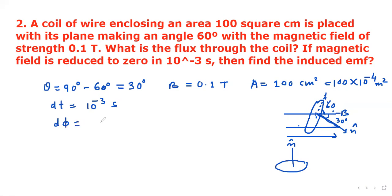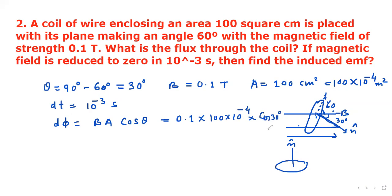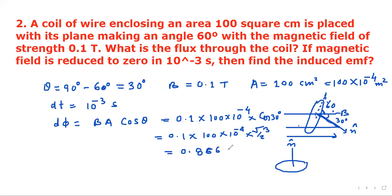Magnetic field B = 0.1 Tesla, area = 100 cm² = 100 × 10⁻⁴ m², theta = 30°, and dt = 10⁻³ seconds. So φ = BA cos θ = 0.1 × 100 × 10⁻⁴ × cos 30° = 0.1 × 10⁻² × (√3/2) ≈ 0.866 × 10⁻³ Wb.